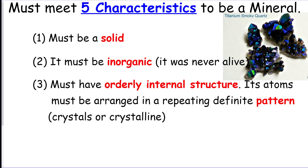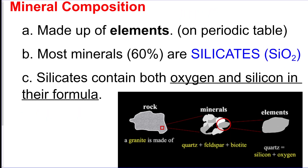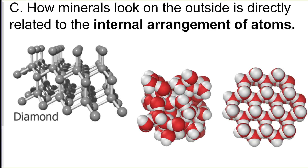We're on rocks and minerals today. There are five characteristics for something to be a mineral: it has to be a solid, inorganic, have an orderly internal structure, be formed naturally (not man-made), and have a definite chemical composition — meaning it has a chemical formula. Minerals are made of elements, and sixty percent of them are silicates, which have silicon and oxygen in their formula. Silicate minerals are shaped in a tetrahedron pattern, like a pyramid, with a silicon ion in the center and four oxygen ions at the corners.